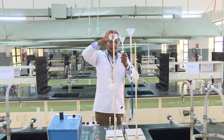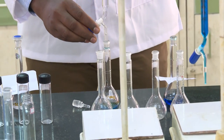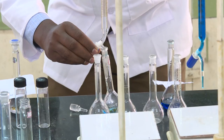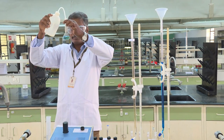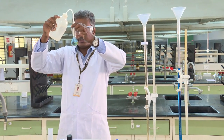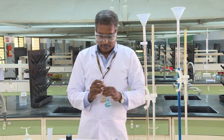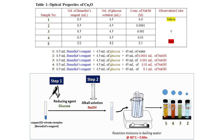We use another burette to add sugar solution — 4.5 ml — to sample 1. It should be read at the lower meniscus. Do it carefully when closing, and then shake this first sample so that the solution is homogeneous. Likewise, we make samples 2, 3, 4, and 5 keeping the volume of Benedict at 0.5 ml and glucose at 4.5 ml, while varying the sodium hydroxide.